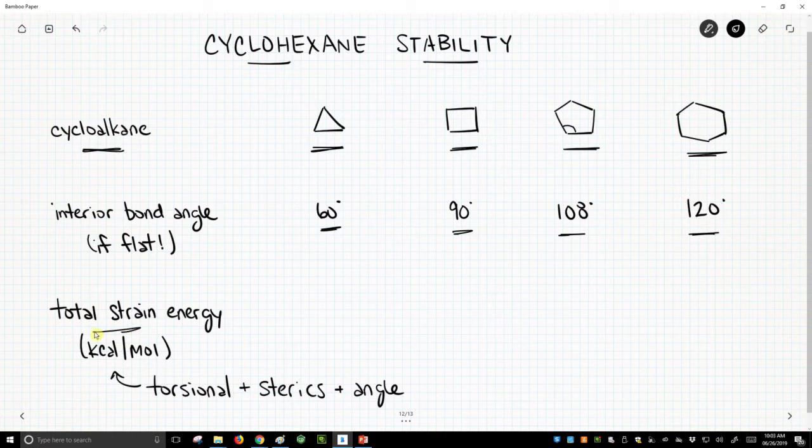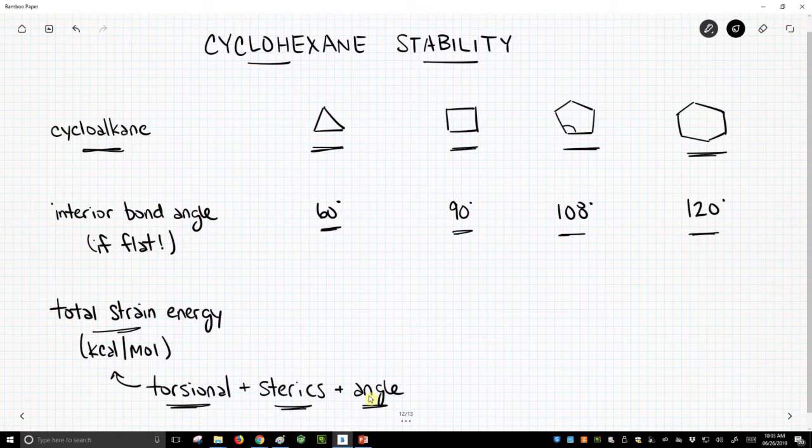And so we're going to list the total strain energies for these structures. Now this total strain includes torsional strain, it can include steric strain, and include angle strain. And angle strain arises from deforming bond angles from what they want to be, from their ideal value of 109.5. So let's see what these strain energies are.